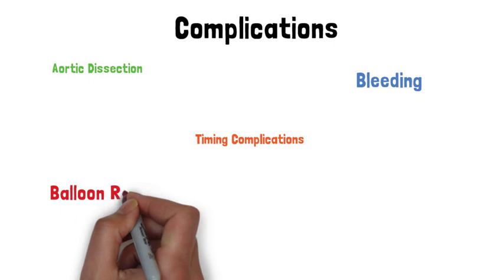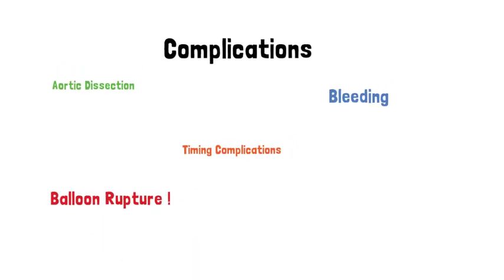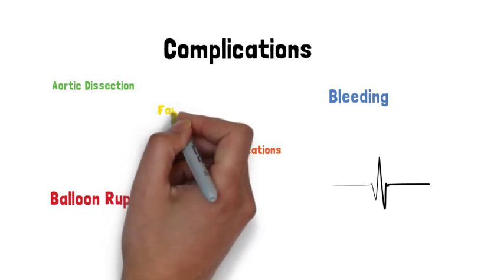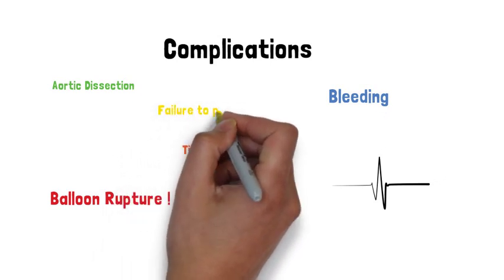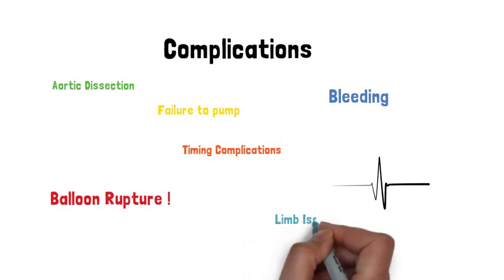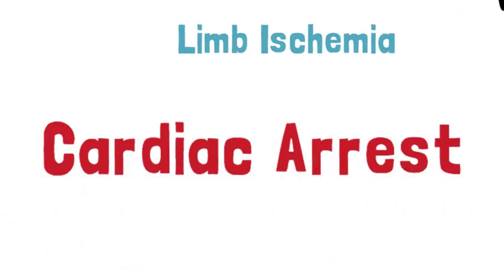You can have a balloon rupture. There can be dysrhythmias that are associated with counter pulsation. Failure for the pump to pump. Limb ischemia can happen as well from positioning issues and also cardiac arrest.